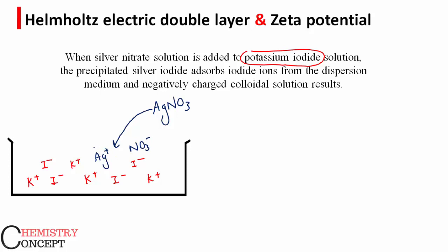Now this Ag positive ion combines with iodide ion to form silver iodide colloidal particle. This silver iodide particle attracts a common ion on its surface. What is the meaning of common ion?